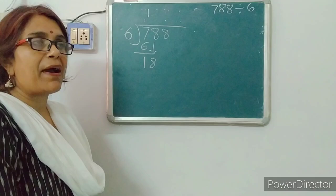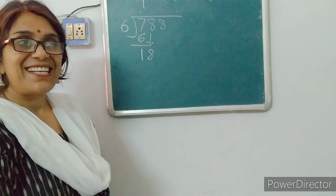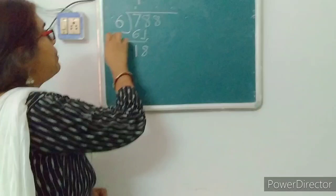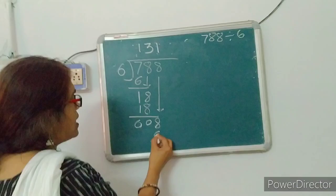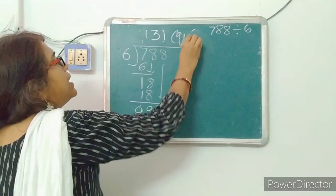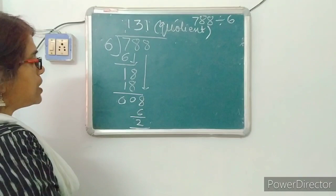We will use the table of 6: 6 ones are 6, 6 twos are 12, 6 threes are 18. That means 18 can be divided by 6, three times. Now the last number is 8: 6 ones are 6. That number is called the quotient. That means 131 is the quotient. And 2 is left over — the remainder is 2.